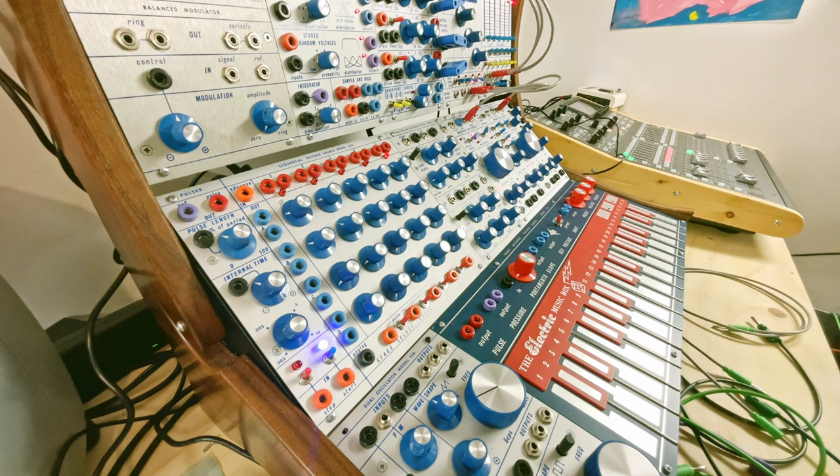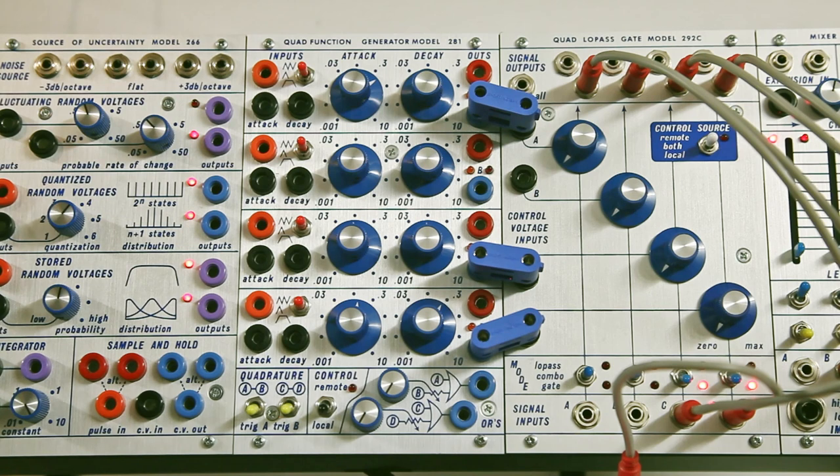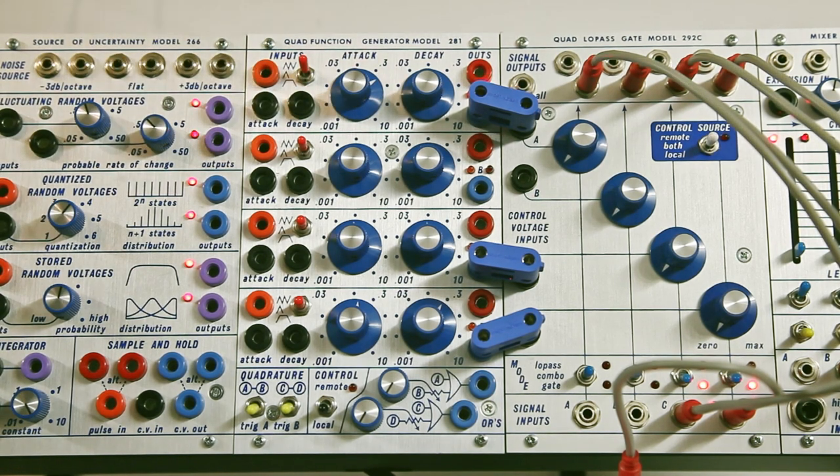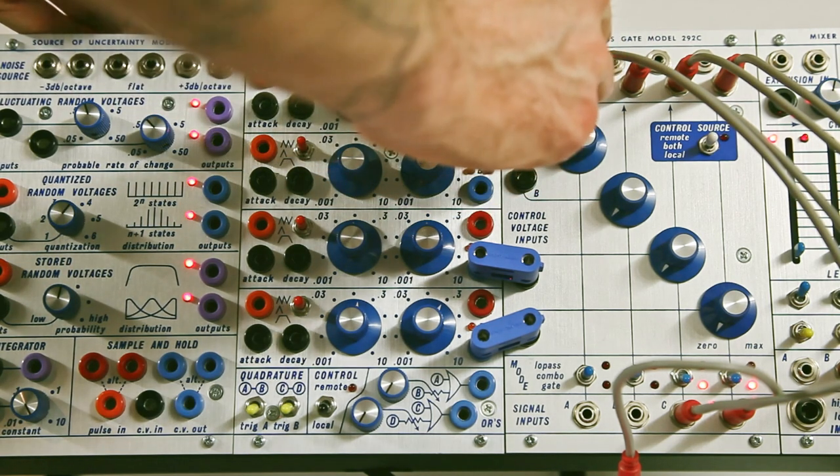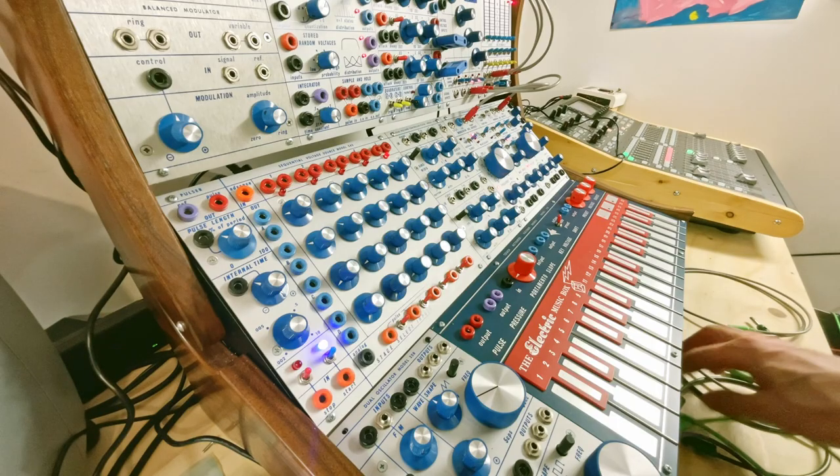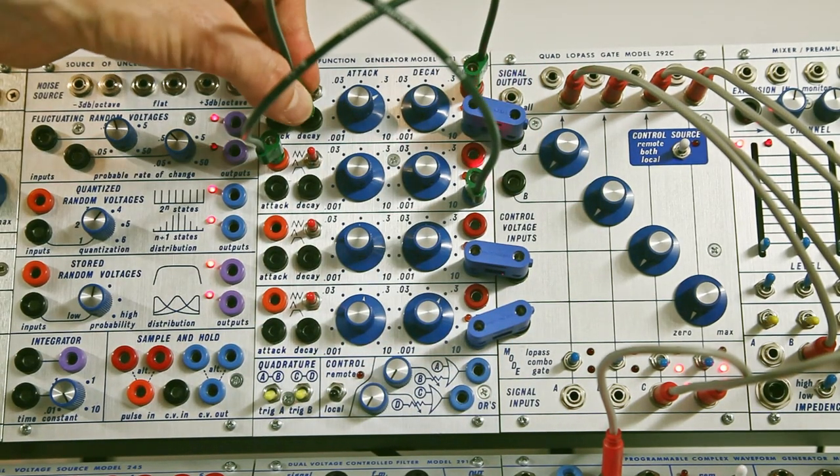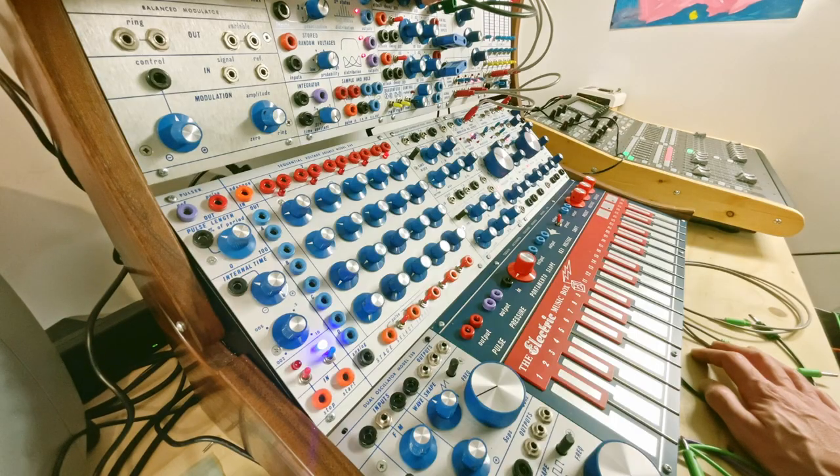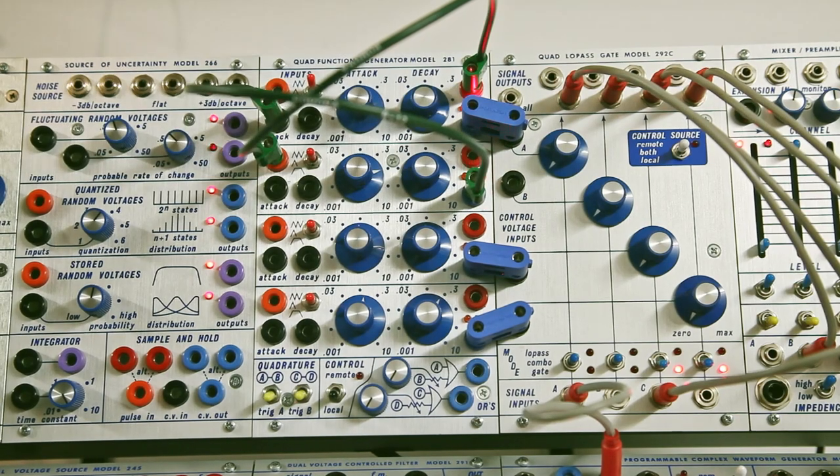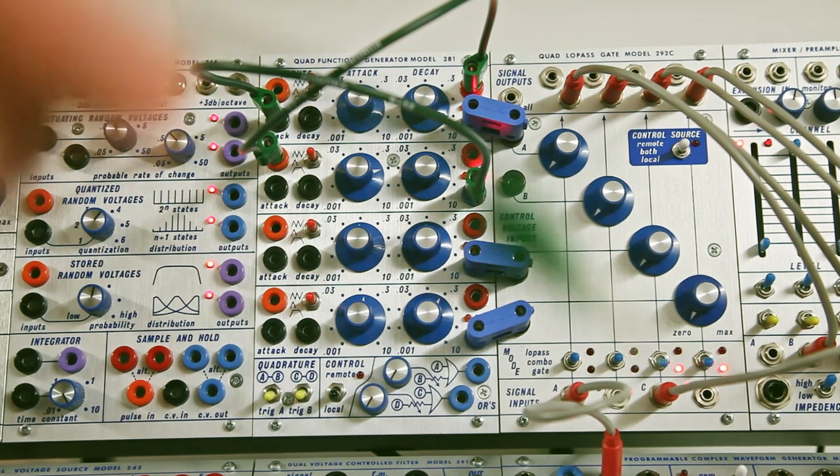Now, of course, I won't go into details of all the possibilities you get with these four functions. But of course, you can use a function to control another function. So for example, let's have a function in self-cycling mode that can control, start another function in single trigger mode. And let's use that function to control, for example, the decay time of the first function. So as you can see, you can get pretty complex modulations using more than one function at a time.